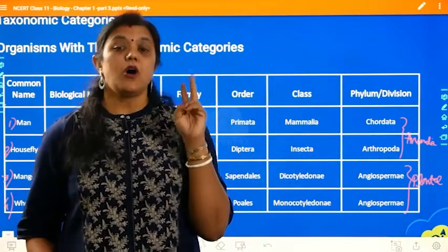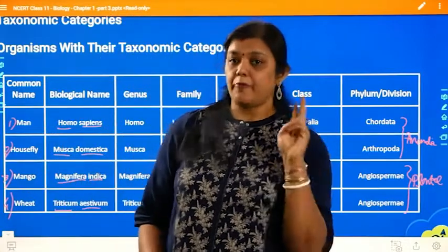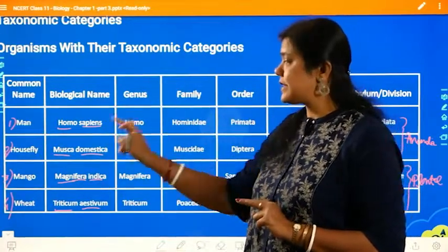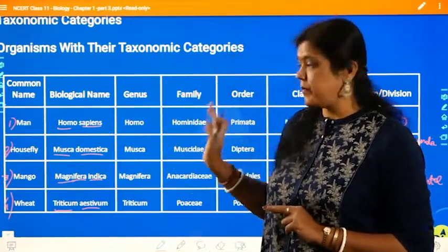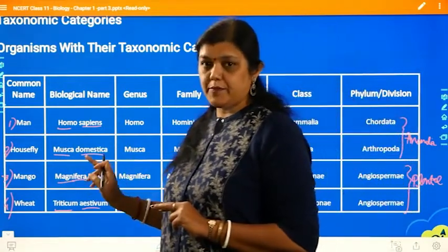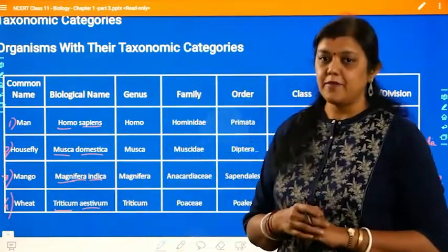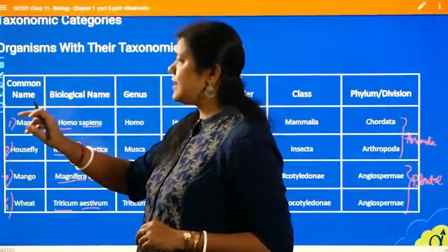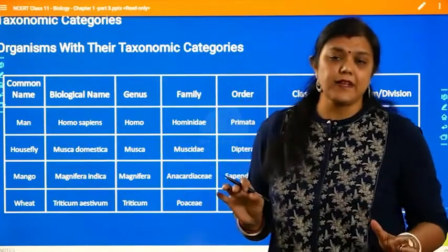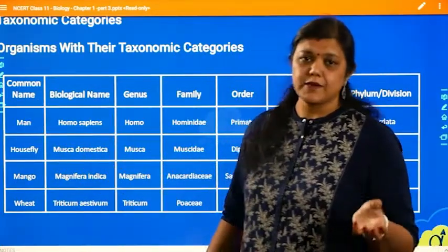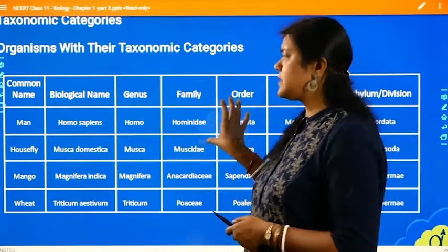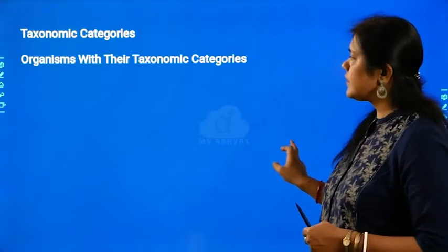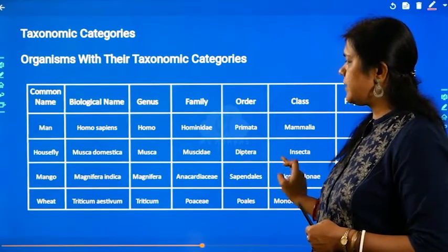So we have two examples of animals and two examples of plants: human or man is Homo sapiens, housefly is Musca domestica, mango is Mangifera indica, and wheat is Triticum aestivum. This table is important because these scientific names may be asked in exams, as this is given in your textbook and you are supposed to know them.